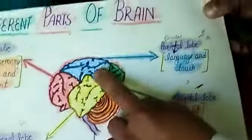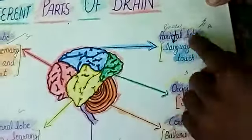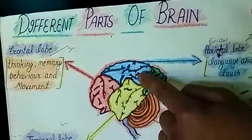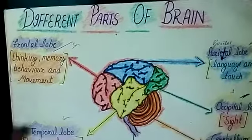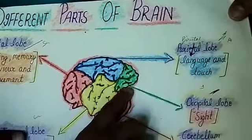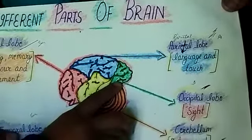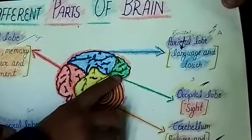Dear friends, this is the second part of the brain. It controls language and touch. It is called the parietal lobe. The third part of the brain is called the occipital lobe. It has two sides.